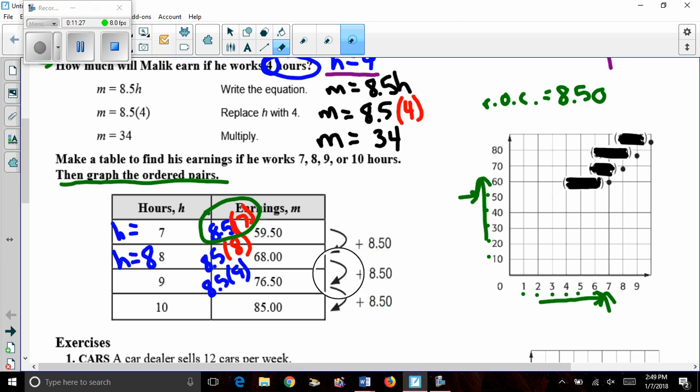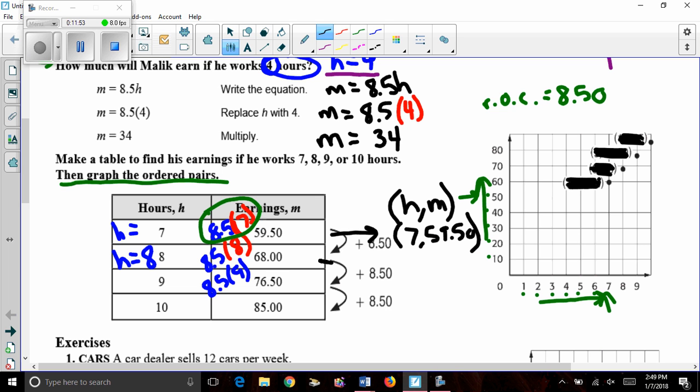This chart allows us to take our numbers and now create an ordered pair. Where instead of x, we have an h, and instead of y, we have an m. So I can take each of my numbers now and say, oh, well, that should be the coordinate 7, 59.50. 8, 68.00, 9, 76.50, and then 10, 85.